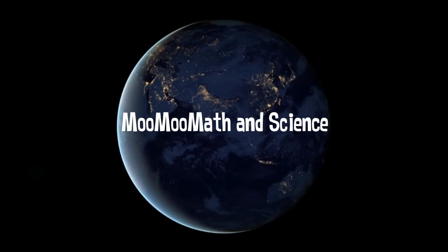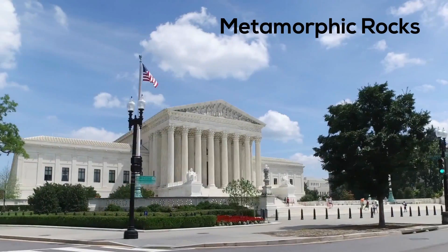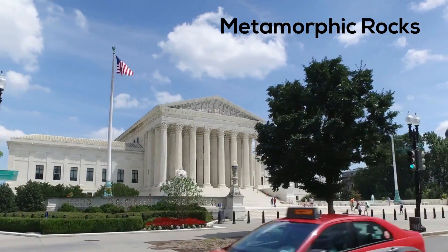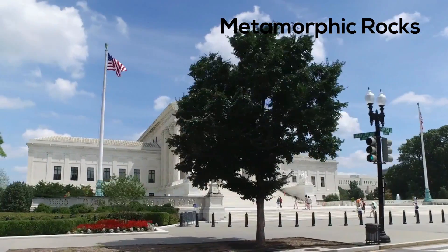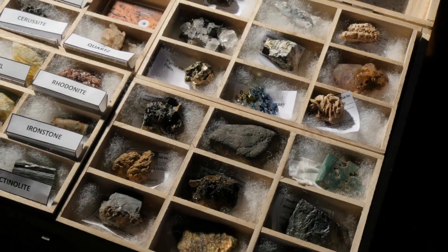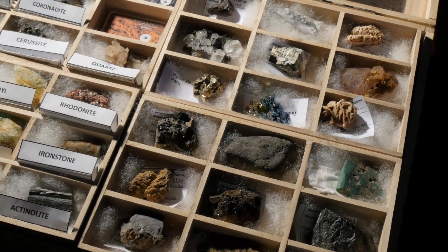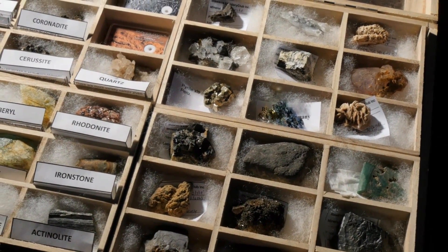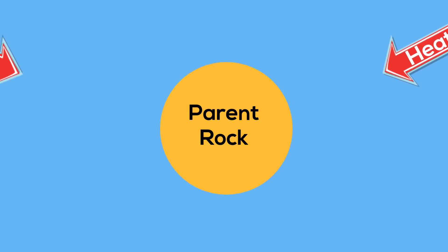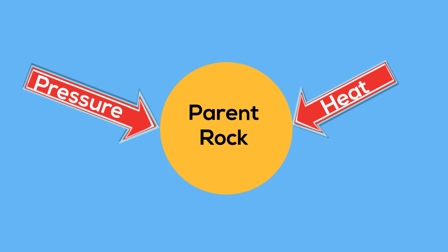Welcome to MooMooMath and Science. In this video, let's take a look at some metamorphic rock examples. Metamorphic rocks come from existing rocks that are subjected to extreme heat and pressure. This heat and pressure changes the original structure into a new type of rock.